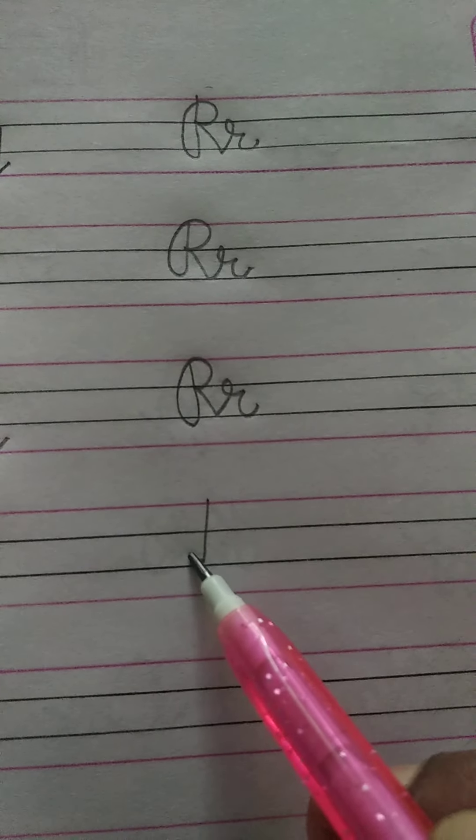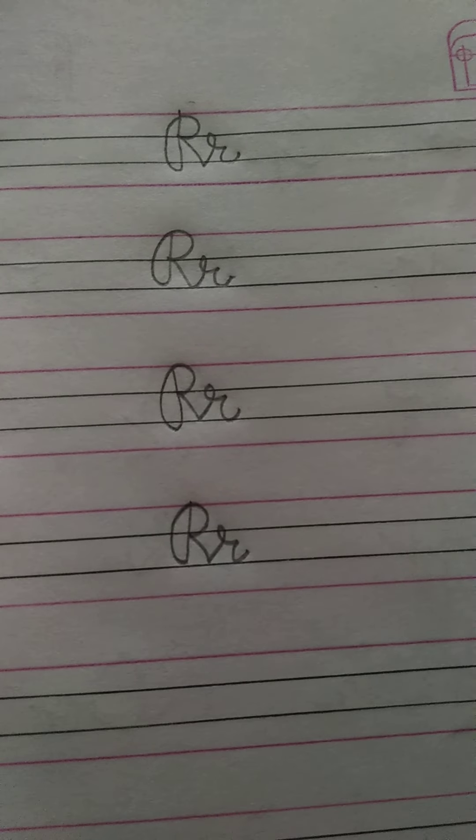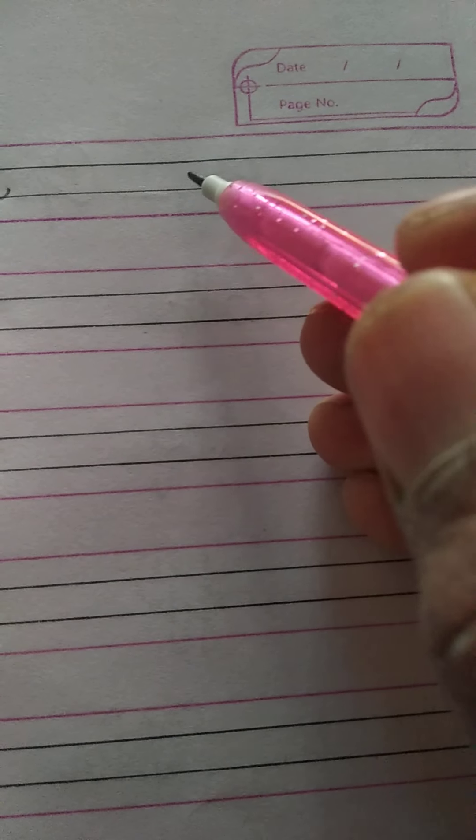R for Rose and Rat. S. S for Ship and Sheep.